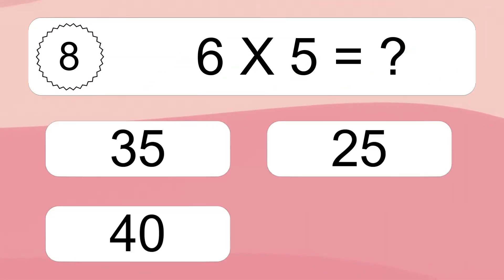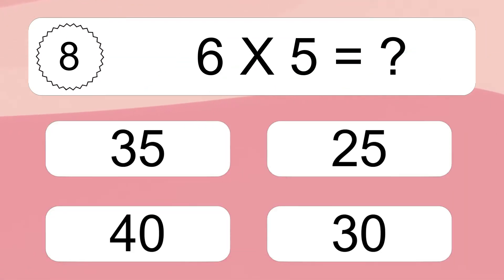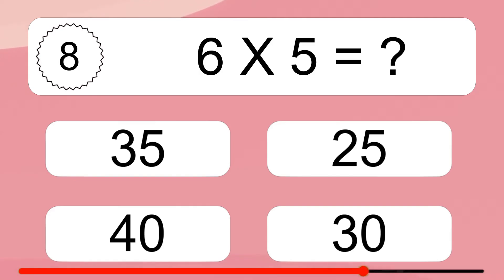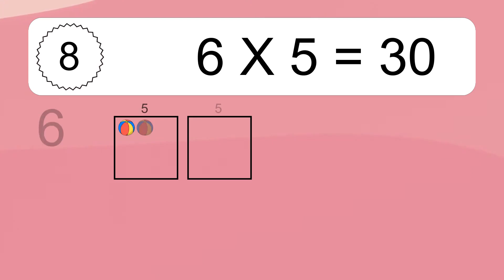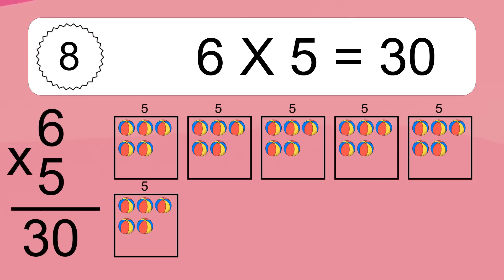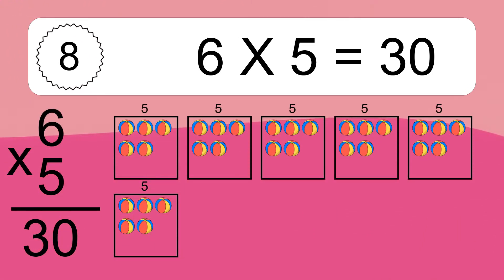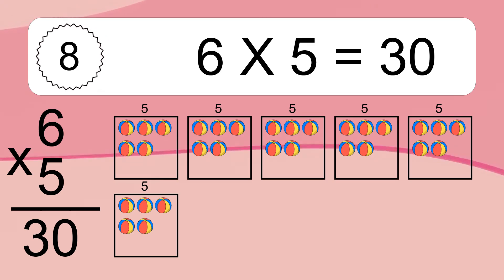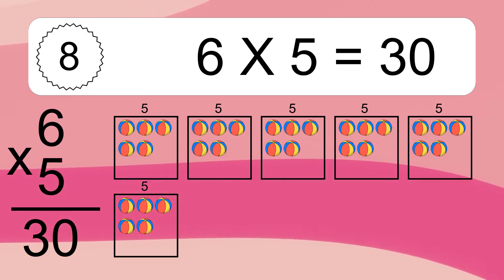6 times 5 equals what? 6 times 5 equals 30. We have 6 boxes and each box has 5 colorful balls inside. If you count all the balls in all the boxes together, you will have 6 times 5 balls. This equals 30 balls.